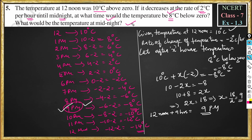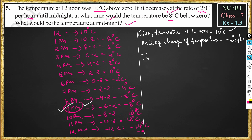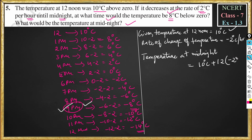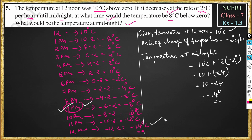Now they are asking us what would be the temperature at midnight. Temperature at midnight equals 10 degree Celsius, which is at 12 noon, plus the change over 12 hours. From 12 noon to midnight the time period is 12 hours. So this will be 12 hours into minus 2 degree Celsius, because per each hour temperature reduces by minus 2 degrees Celsius. This becomes 10 plus 12 times minus 2, which is minus 24. So this is 10 plus minus 24, and plus of minus is minus, so this becomes 10 minus 24, and the result is minus 14 degree Celsius. So at midnight the temperature is minus 14 degree Celsius.